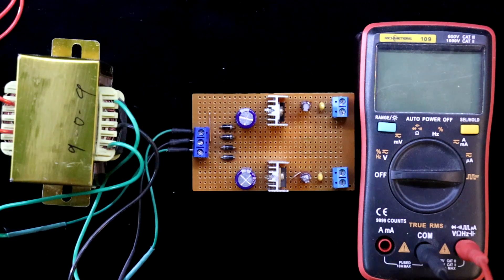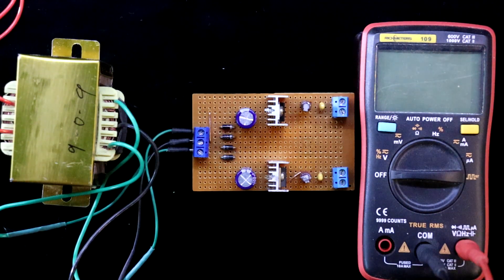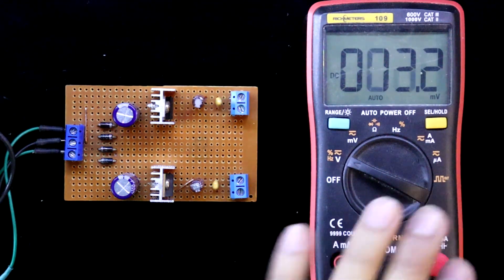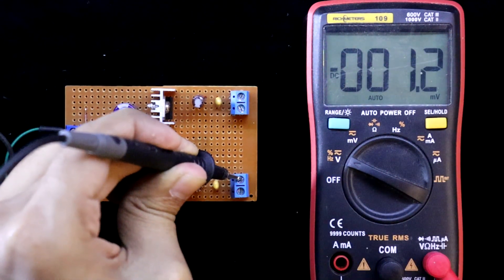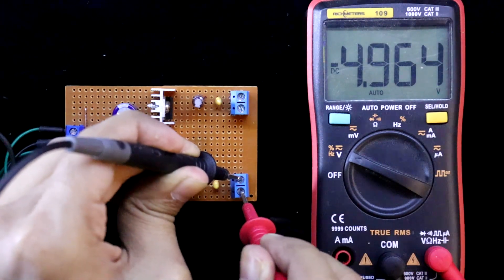Turning on the power supply. It is ground. Should be minus 5 volt.